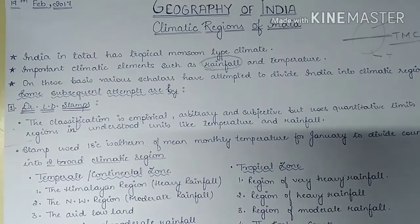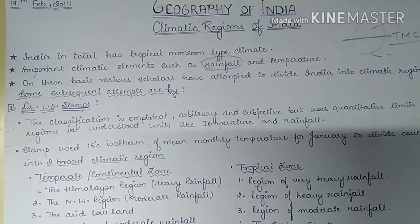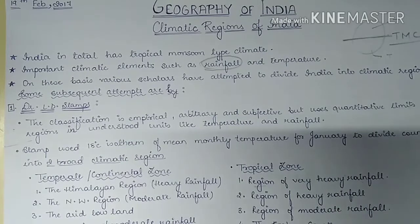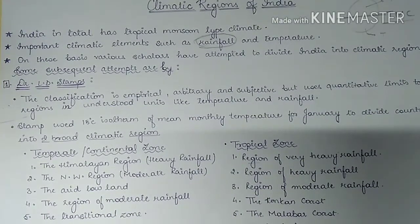Various scholars — both foreign and Indian — have classified Indian climate. Foreign scholars include LD Stamp, Koppen, Thornthwaite, and Trewartha. Indian scholars include Dr. Subramanyam and Dr. RL Singh, among others. The most prominent subsequent attempts were by LD Stamp, Koppen, Trewartha, Thornthwaite, and RL Singh. We will study the distribution of climatic regions of India on the basis of each of these scholars.